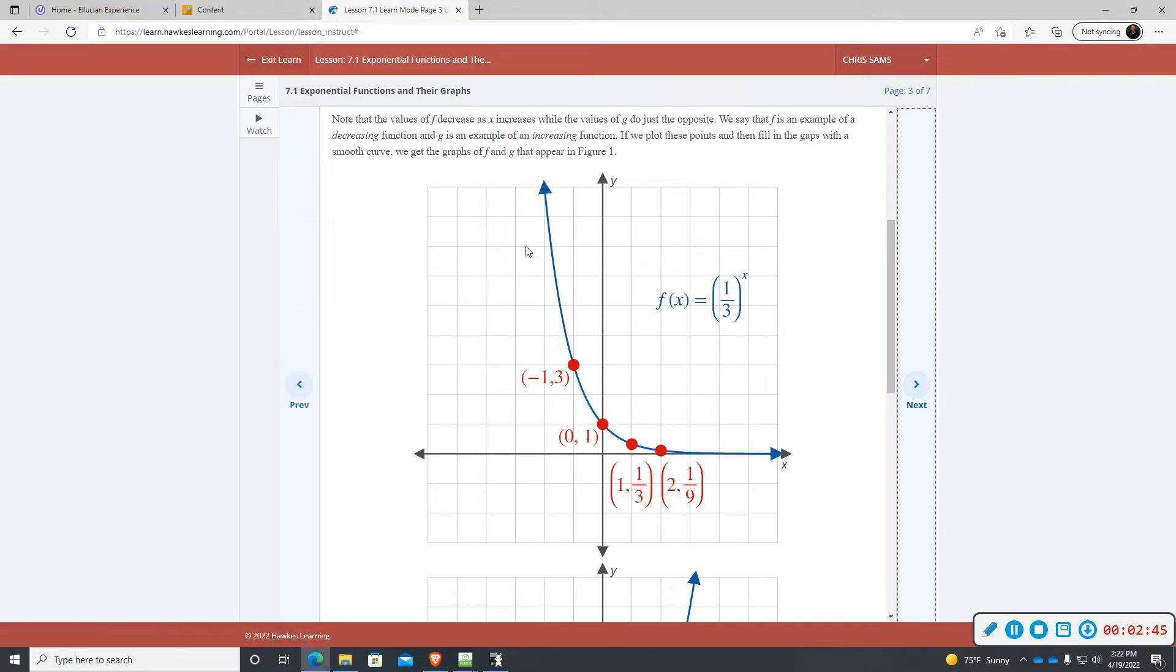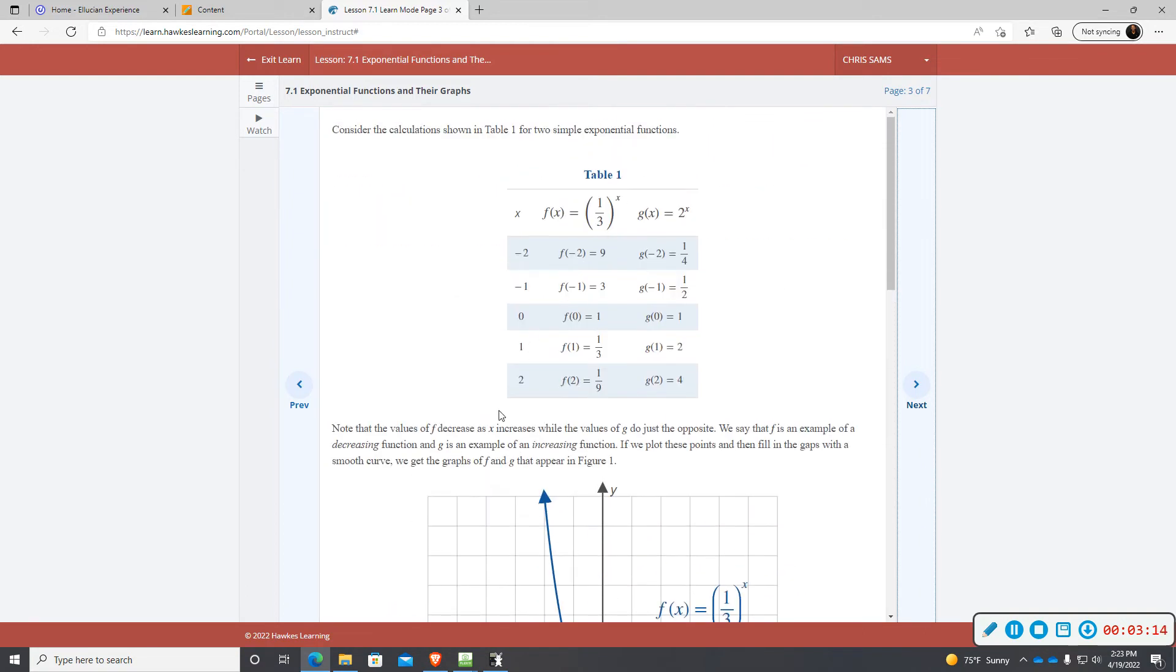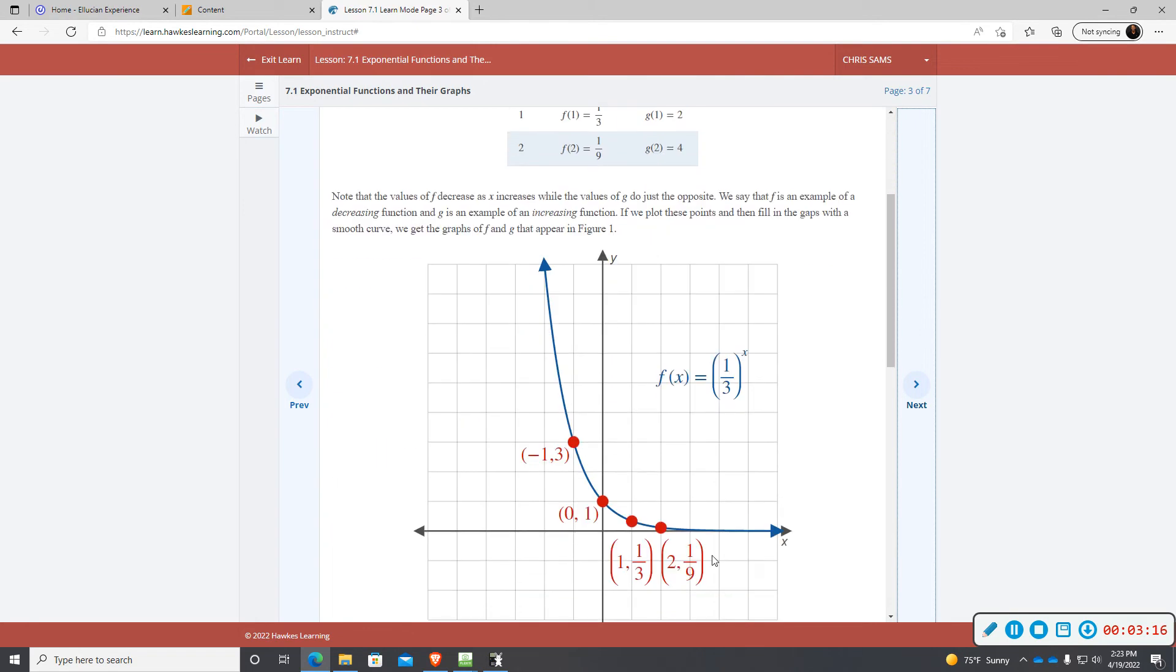With exponential functions, they will typically go through that ordered pair zero, one, provided that you just have the basic form, some number raised to the x power. They will all go through zero, one. And you can kind of see the growth. When it's bigger than one, it could be 1.2, it could be 1.01. As long as this number is bigger than one, it will grow, go up from left to right. And when it is less than one, it will decrease, left to right.